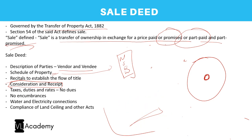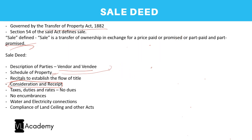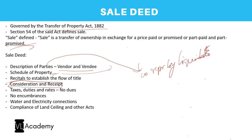A special case is sale by a liquidator. The structure is essentially the same, but the parties are described as the company represented by the liquidator. In the recitals, it must be specified that the company is undergoing liquidation and its name will be removed from the register. That is the only material difference.